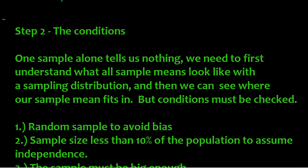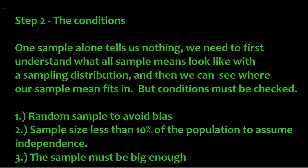Let's move on to the conditions. All right, the conditions to build our sampling distribution are pretty straightforward. We've talked about these conditions before. They're not that difficult. We've used them plenty. Number one is the sample must be random to avoid bias. And number two is that the sample size must be less than 10% of the population to assume independence.